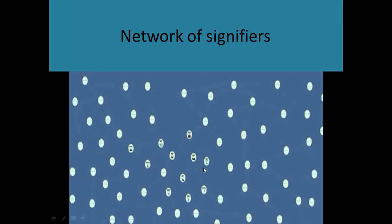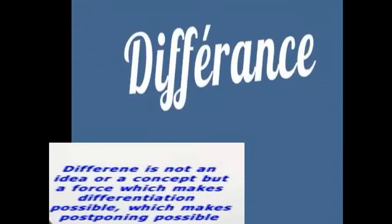I take up a sign, I try to understand it, but then I am further directed to further signifiers, and then again further signifiers — the meaning is never complete, never made complete. There is always a deferral — postponed to some other time. That's how Derrida arrived at différance.